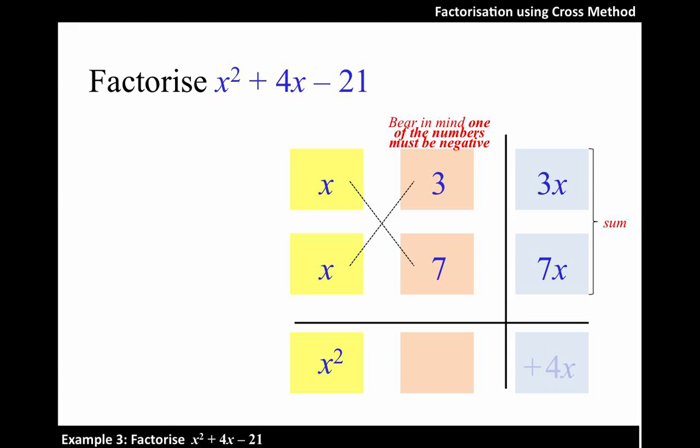So to get positive 4x, we should have negative 3x and positive 7x. That sum would give us positive 4x.